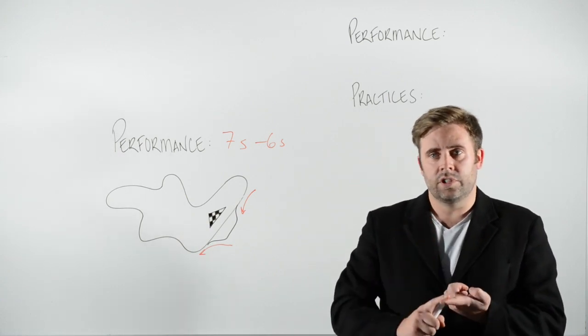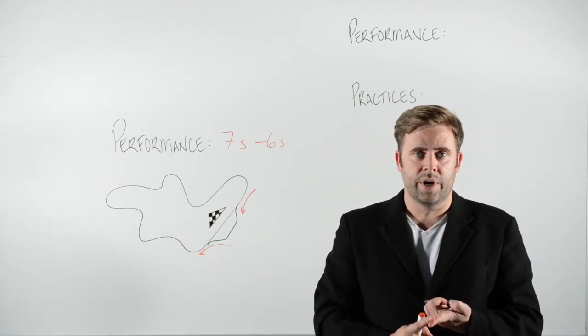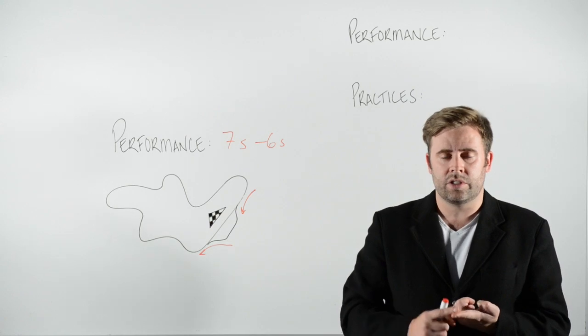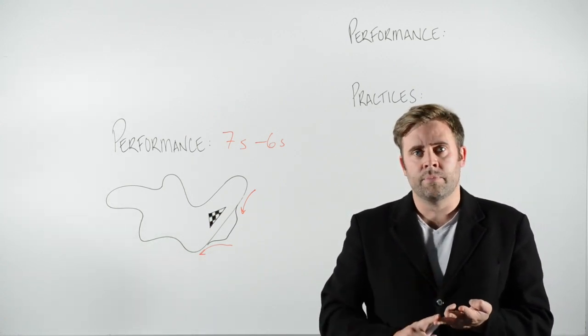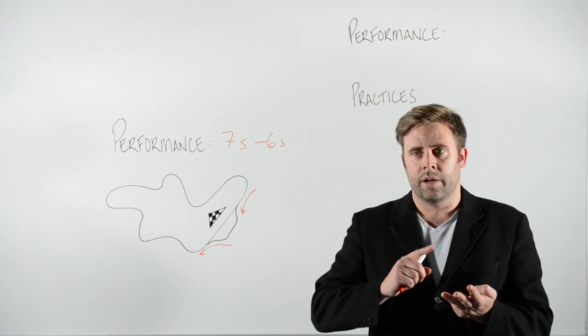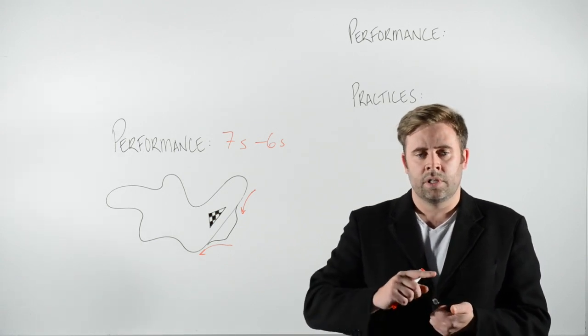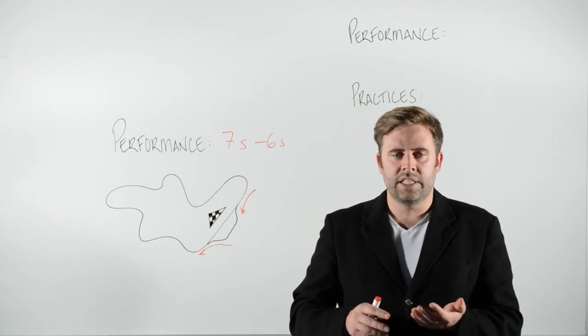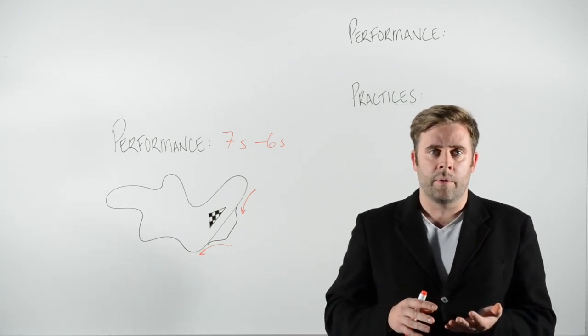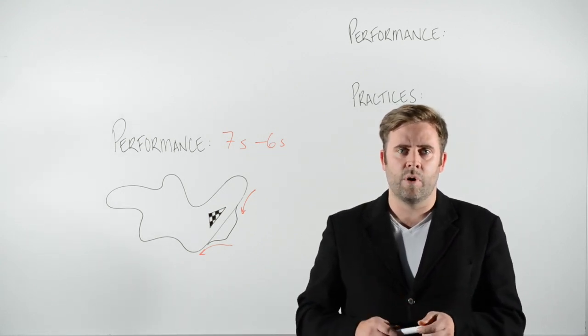First of all it's driving into the pit in a certain way, keeping the speed limits and such. The second one is lifting the car. The third one might be unbolting the wheel in a certain way, bolting the wheels back on again, cleaning the visor of the driver, giving the driver the go-ahead to drive back out again. And all of these practices need to be performed in an optimal way so we can affect the performance.